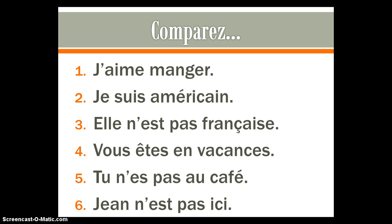Hopefully you decided that trois, cinq, and six were all negatives. Numéro trois: Elle n'est pas française — she is not French. Cinq: Tu n'es pas au café. And six: Je n'es pas ici. These are three examples of negative sentences. We're going to take a look.